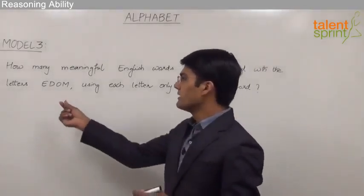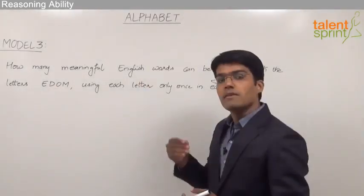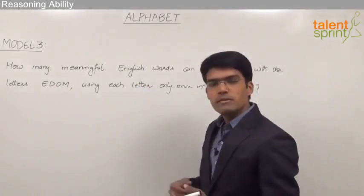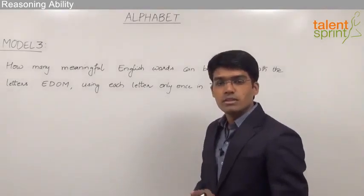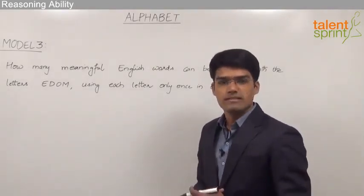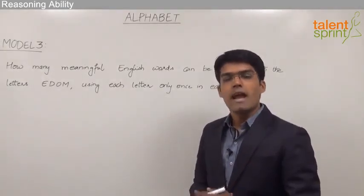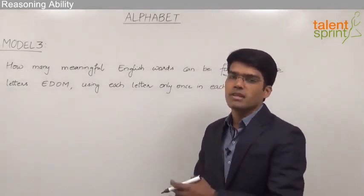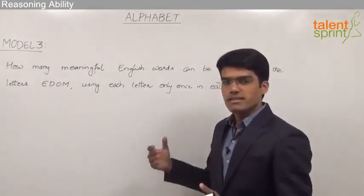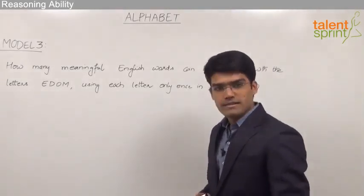Four letters have been given: E, D, O, and M, and we are supposed to make all the possible meaningful words from the letters given using each letter only once. That means repetition is not allowed and each letter has to be used in the word formed. So let us see how many words we can make out from the given letters.